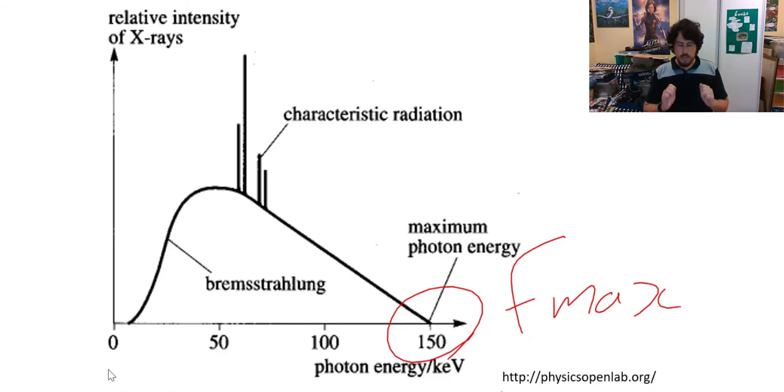Now, the more kinetic energy it has when it is stopped by a nucleus in the target metal, the more energy it can then put into the x-ray. And the way to get more energy into that electron is to increase the electric field strength. So what you're doing is you're increasing the voltage across the x-ray tube.